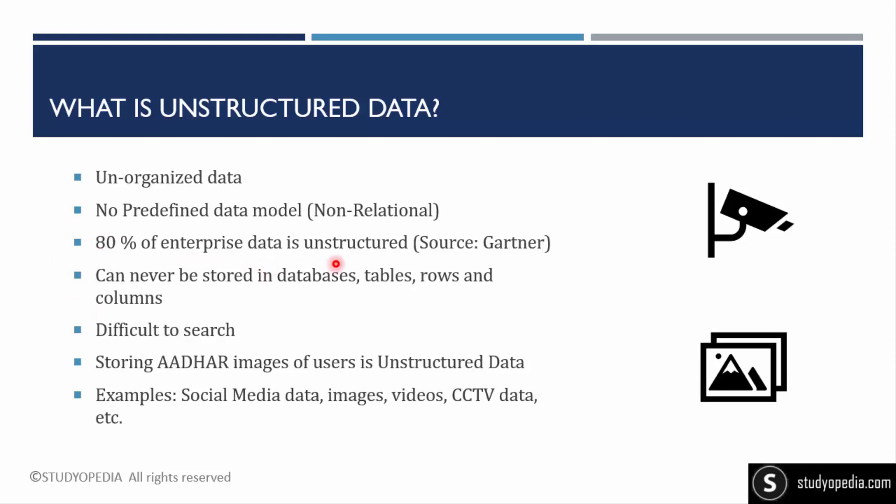Only 20% of data is structured, which can be managed in the form of database tables. Unstructured data cannot be stored in rows and columns, and it is hard to search. For example, a Facebook post can include text, images, videos, and documents — these are not in structured form.